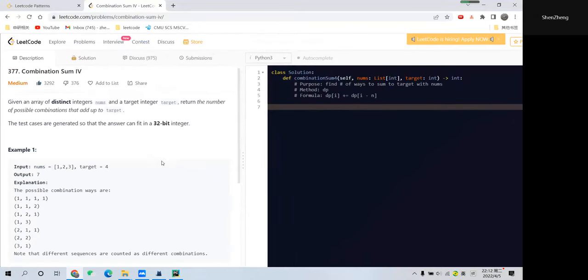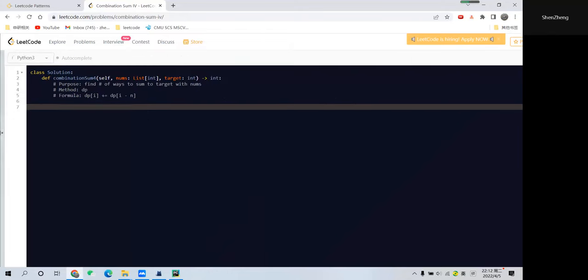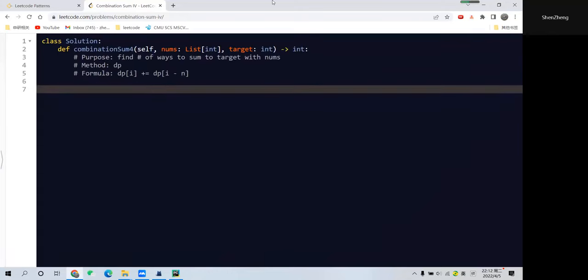Now finishing the quick problem introduction, let's think about how to solve this problem. If you remember, for Combination Sum 1, 2, 3, and also the similar problem Coin Change, we're using the dynamic programming approach. For dynamic programming, the fundamental thing is to find out the transition formula, which I listed here.